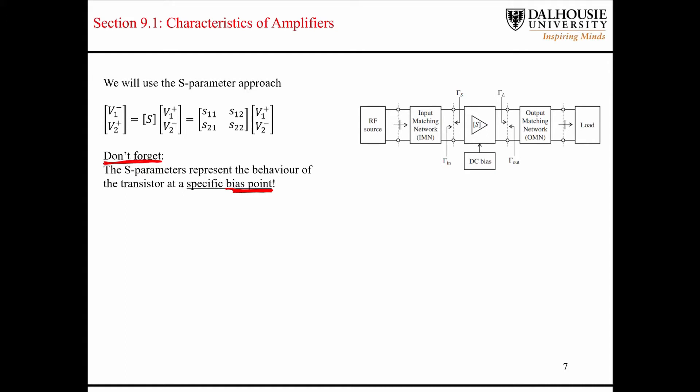And so if you're designing an amplifier based on a set of S-parameters and you go through the entire design, you have to make sure that you design a bias network that matches the bias point that the S-parameters were provided for.